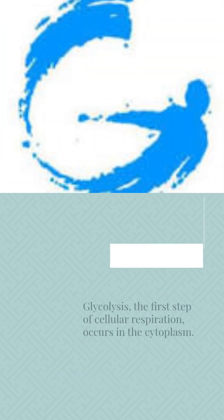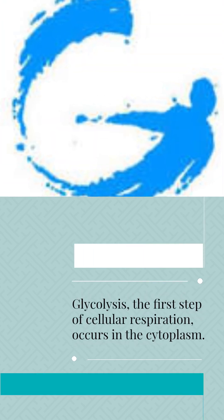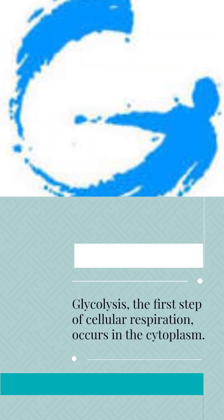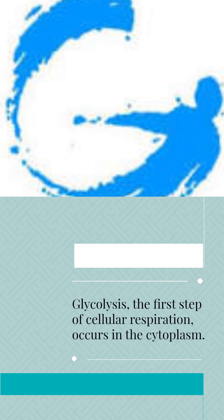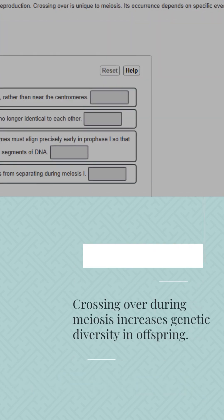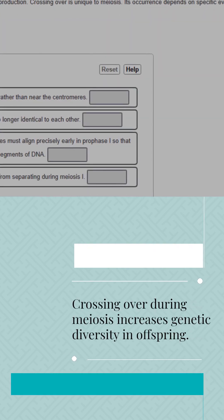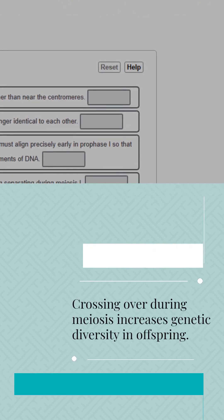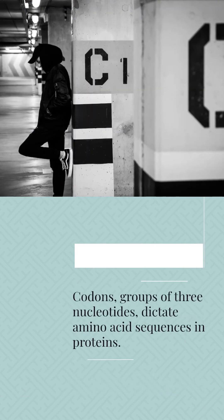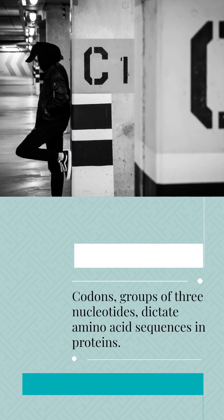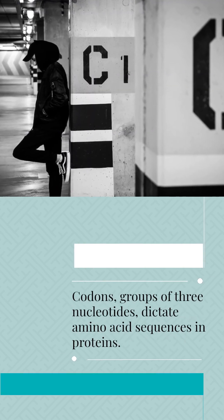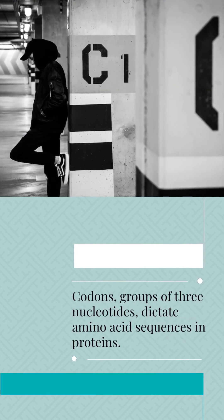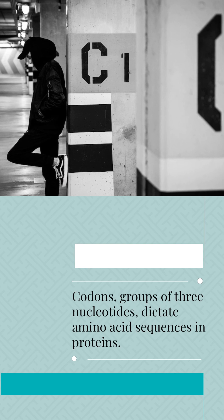Glycolysis, the first step of cellular respiration, occurs in the cytoplasm. Crossing over during meiosis increases genetic diversity in offspring. Codons, groups of three nucleotides, dictate amino acid sequences in proteins.